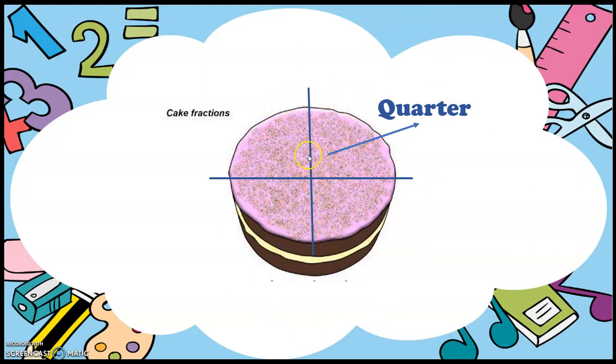Now quarters are the equal 4 divisions of any objects. Each single is called as quarter. And if we call the sum, the quarters, it is the sum of quarters. I have 4 quarters of this cake. 1, 2, 3 and 4. These 4 quarters are making 1 cake.